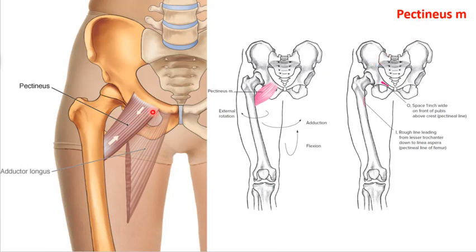The pectineus is a hip flexor that is part of the adductor group. It can do hip adduction, but because of the angle and where it's positioned, it's really looked upon as a hip flexor. It can also do some external rotation. The adductors can actually do everything except abduction — depending on femur position, they can do external rotation, internal rotation, hip flexion, and sometimes extension. Pectineus specifically does hip flexion, a little adduction, and a little external rotation, attaching along the ramus of the pubic bone.